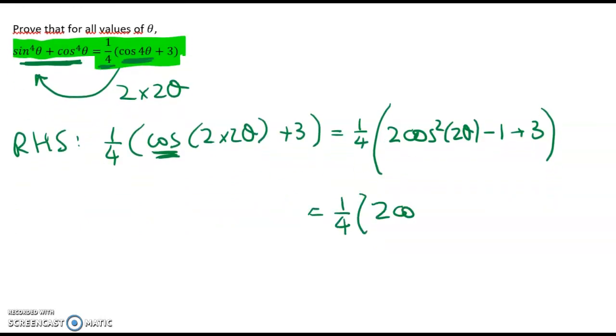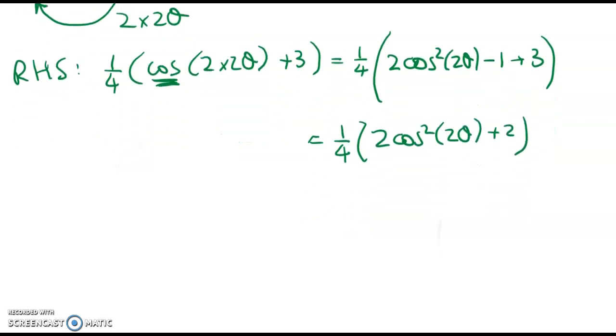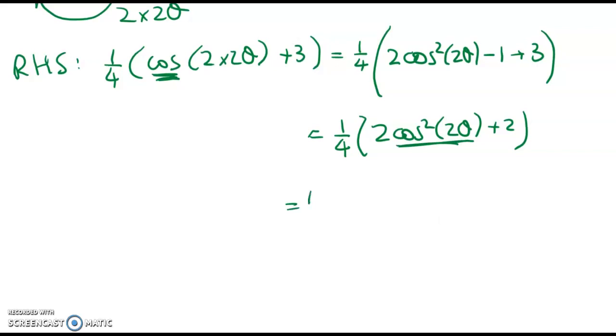So we've got 1 quarter of, so 2 cos squared 2theta minus 1 plus 3. I'm going to clean up really carefully as I go, so I get 2 cos squared of 2theta plus 2. Now I'm going to do this, and I've got to square it.